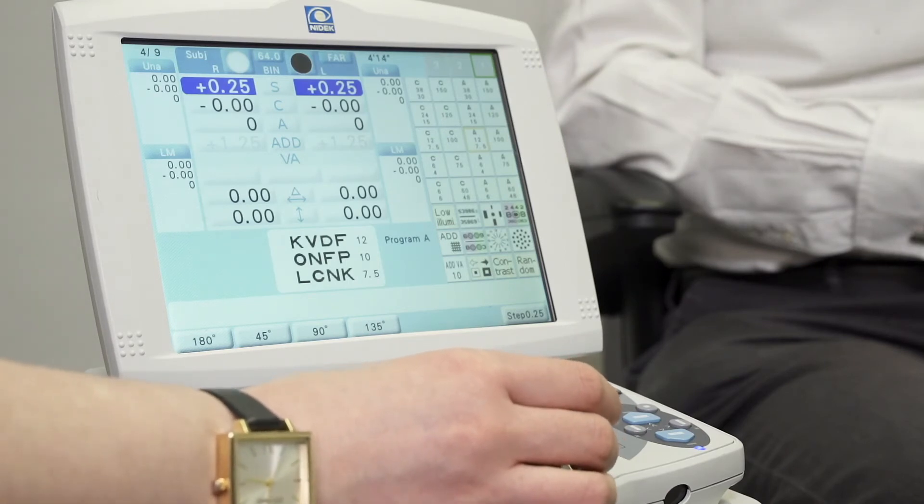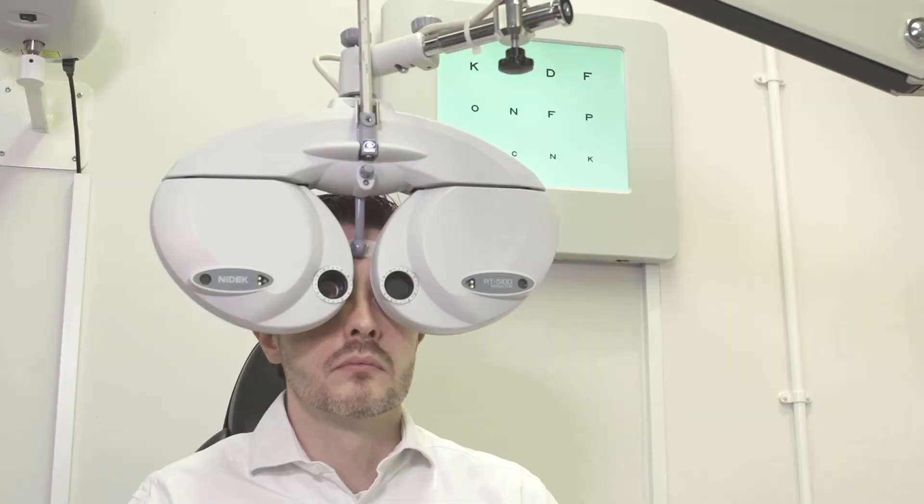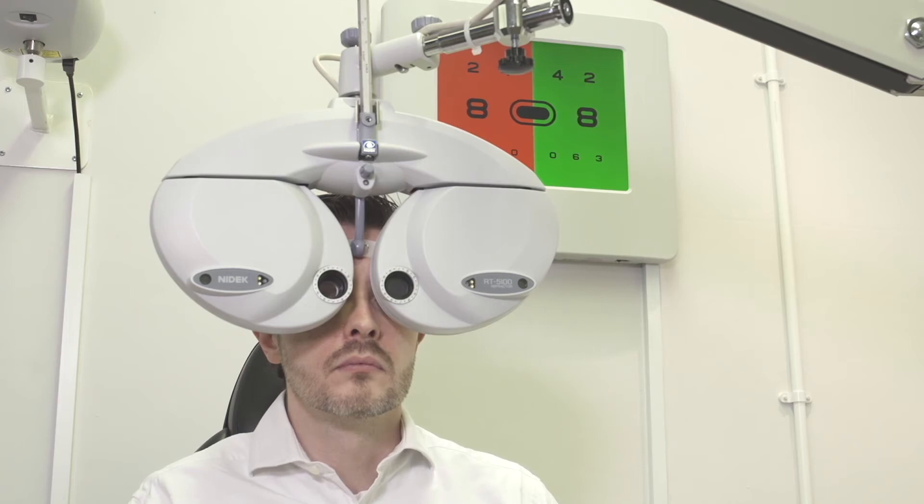Once we're happy that we've got their sphere as best we can, we'll move on to the duochrome test, asking the patient whether the letters and the numbers appear clearer on the red or the green.